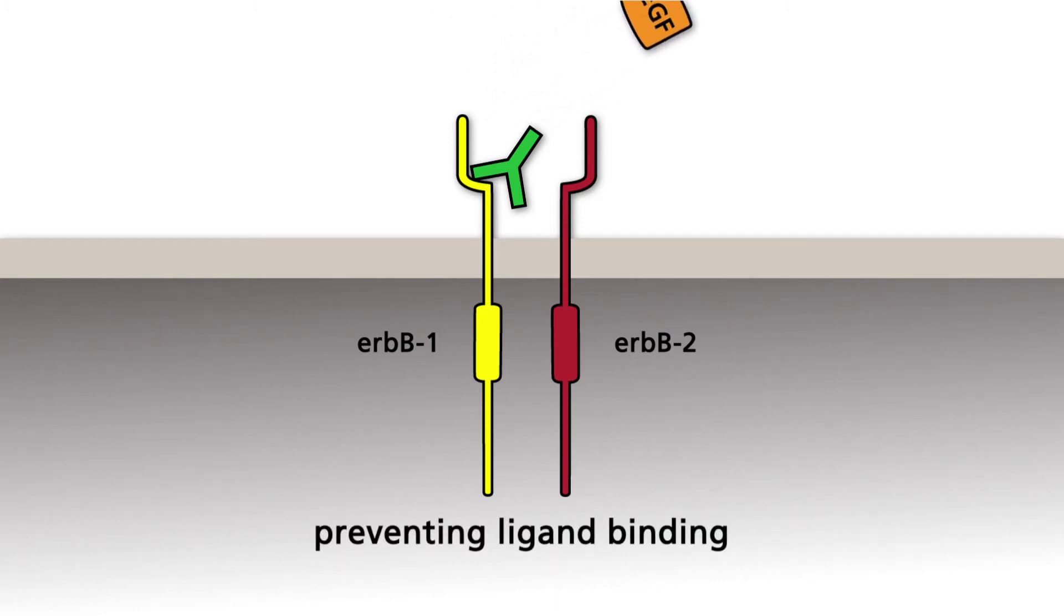Thus, the presence of Cetuximab prevents formation of both the ERB-B1 receptor homodimer and the heterodimer with ERB-B2. Cetuximab is used in the treatment of colon cancer as well as cancers of the head and neck.